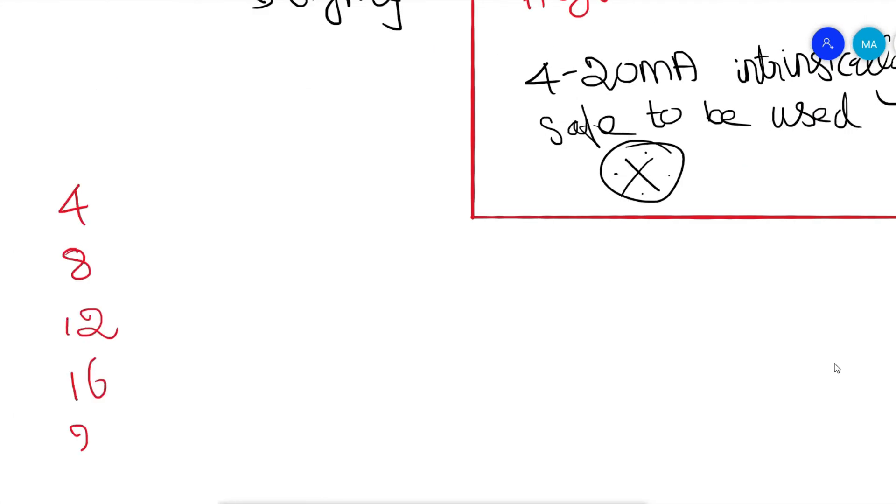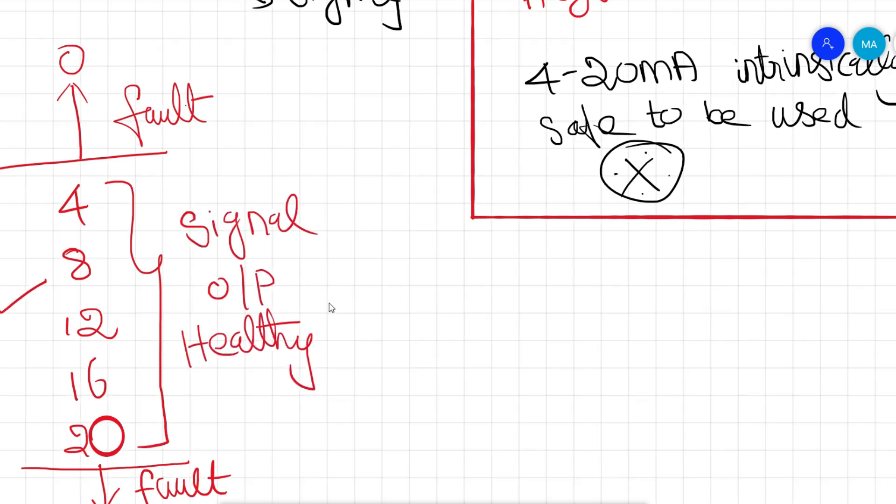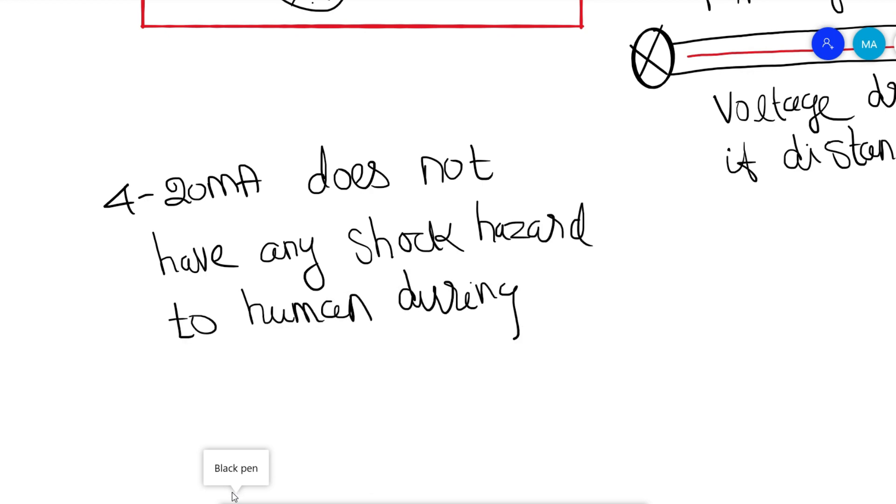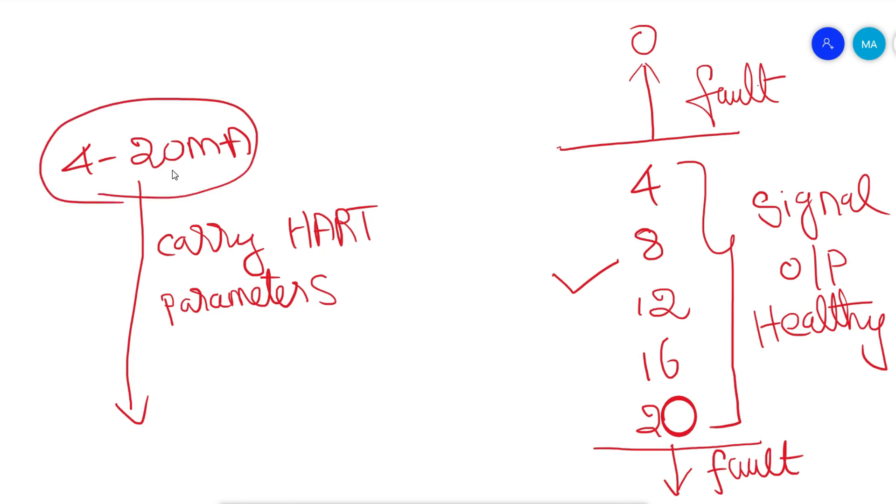Additionally, a value slightly above or below the nominal 4-20 milliamp signal can be considered as a signal or major fault. When used with a normal 24-volt DC loop power supply, no one touching the wire terminals will get shocked. The main important use of 4-20 milliamp signal is that it can carry hard digital data superimposed on its primary DC signal, carrying process and smart parameters along with this cable.